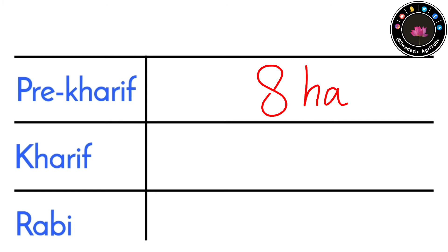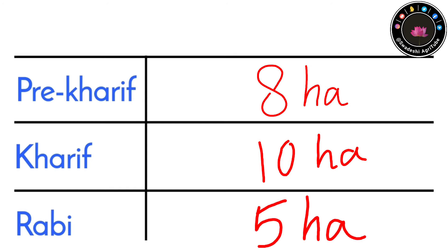In Kharif season, he cultivated the total of 10 hectare. In Rabi season, he cultivated only 5 hectare of land. The rest 5 hectare is not cultivatable in this Rabi season.